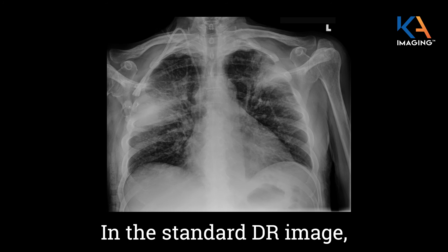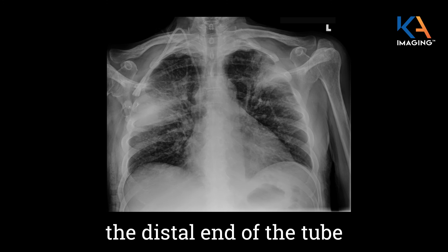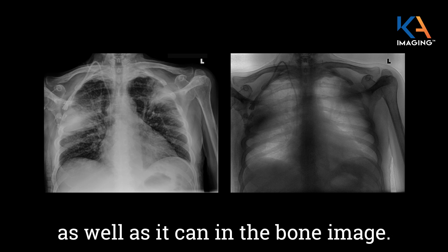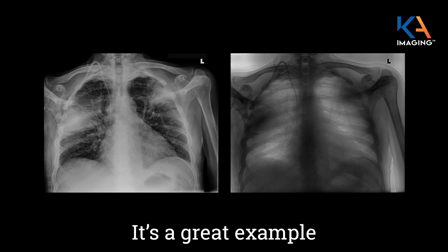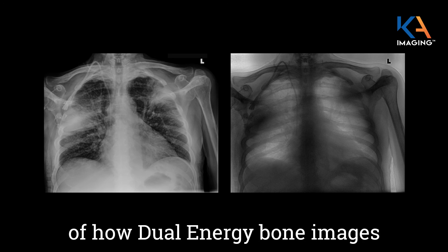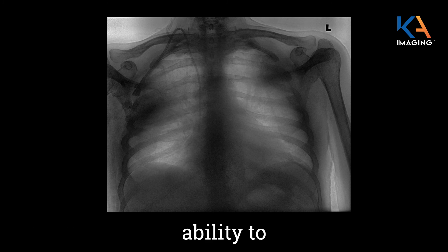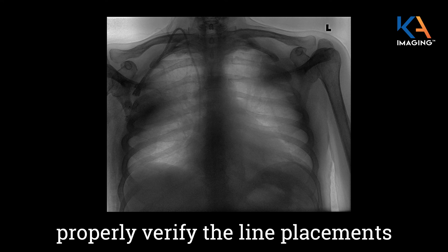In the standard DR image, the distal end of the tube obviously can't be visualized as well as it can in the bone image. So it's a great example of how the dual energy bone images can greatly enhance a physician's ability to properly verify line placement.